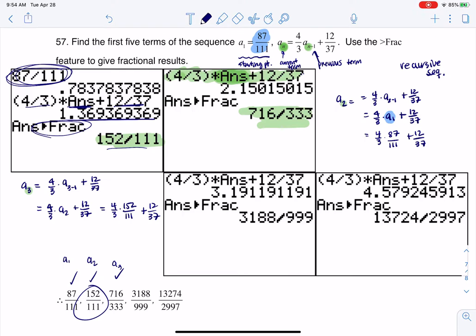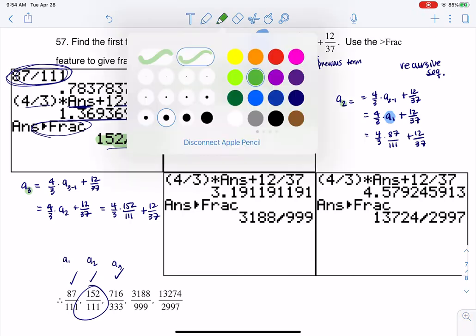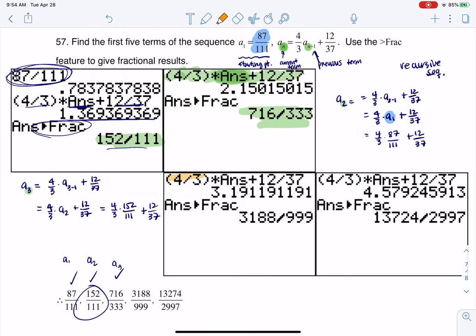Right, if I want to take A, if I want to find A sub 4, all right, if I want to find A sub 4, take 4 thirds times what you previously got, which was 716 over 333, and add 12 37ths to it, and there's my next term.